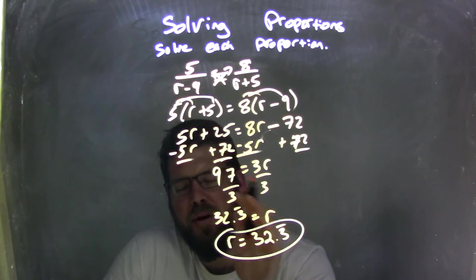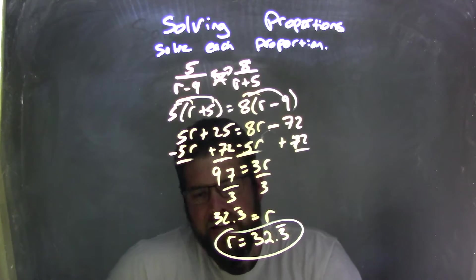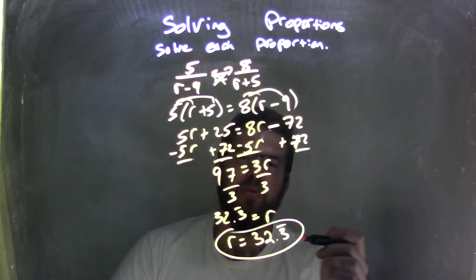Noted it's not rounded, because I put that bar up there saying it's repeating forever. And then I wrote this nice and neatly to give me my final answer of r equals 32.3 repeating.